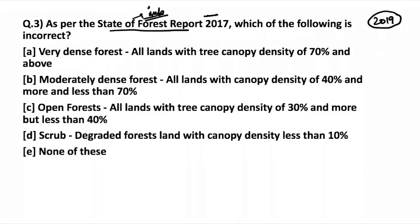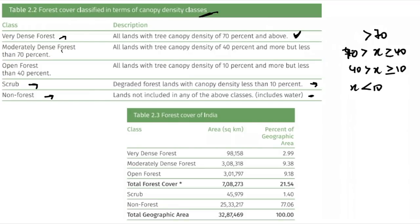Going through each option: all land with tree canopy density of 70% and above — correctly classified as very dense. Moderately dense is 40% and more but less than 70% — correct. For open forest, the tree canopy needs to be 10% and more but less than 40% — this is the incorrect statement in the question. Scrub is degraded forest land with canopy density of less than 10% — correct. So the incorrect statement relates to the open forest classification. Remember these canopy density classes for the exam.